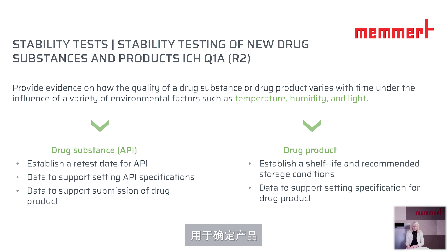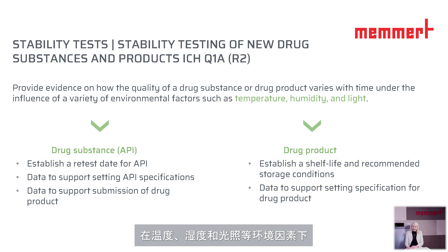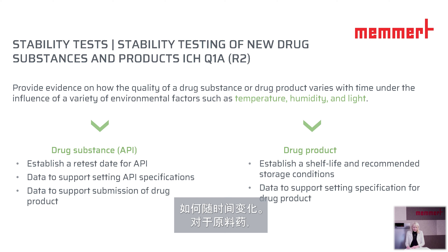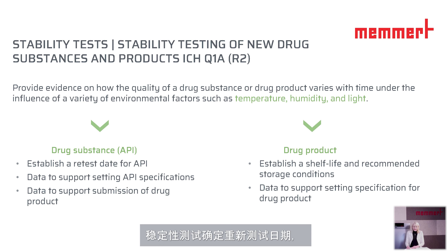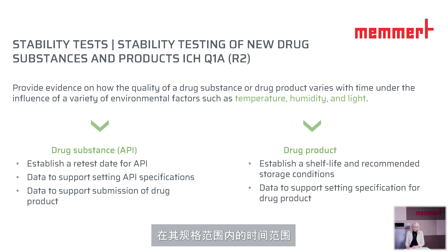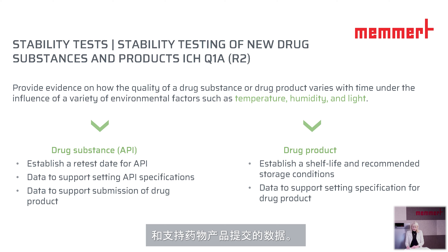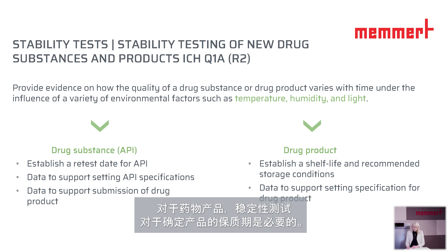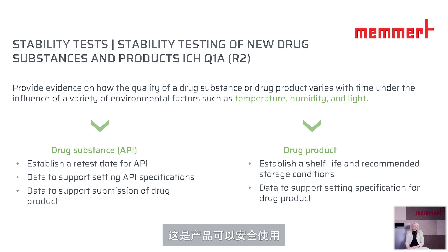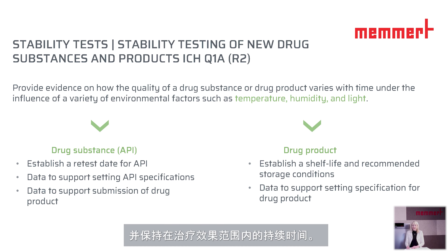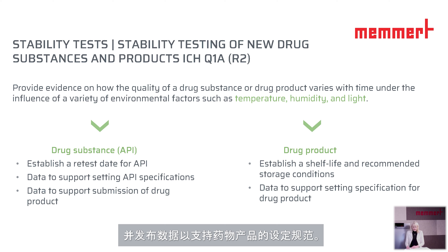Stability testing is used to establish how the product changes over time under environmental factors such as temperature, humidity, and light. For drug substances, stability testing determines the retest date — the timeframe during which the drug substance is expected to remain within its specification and therefore can be used in the manufacturing of drug products. It also helps establish data to support setting API specifications and data to support submission of the drug product. For drug products, stability testing is necessary to fix the shelf life — the duration for which the product is safe to use and retains its therapeutic effect — and to establish recommended storage conditions and specification data.